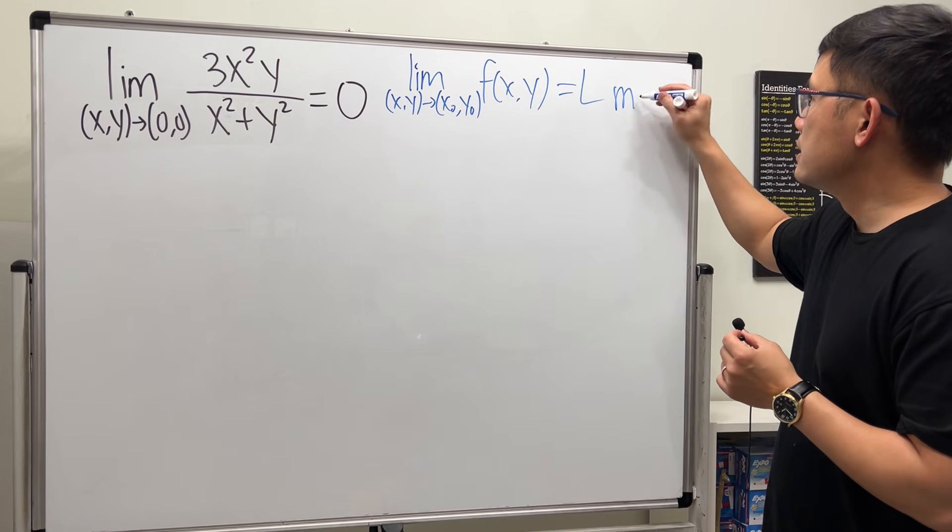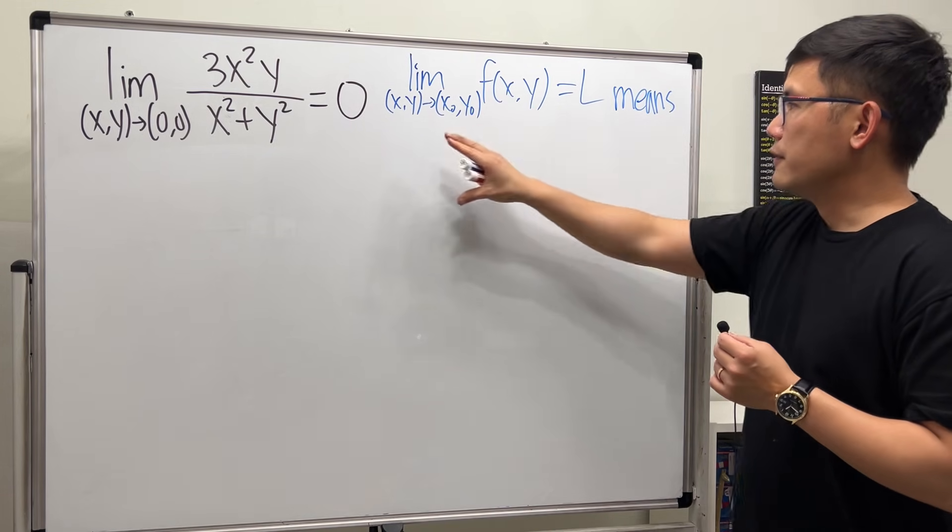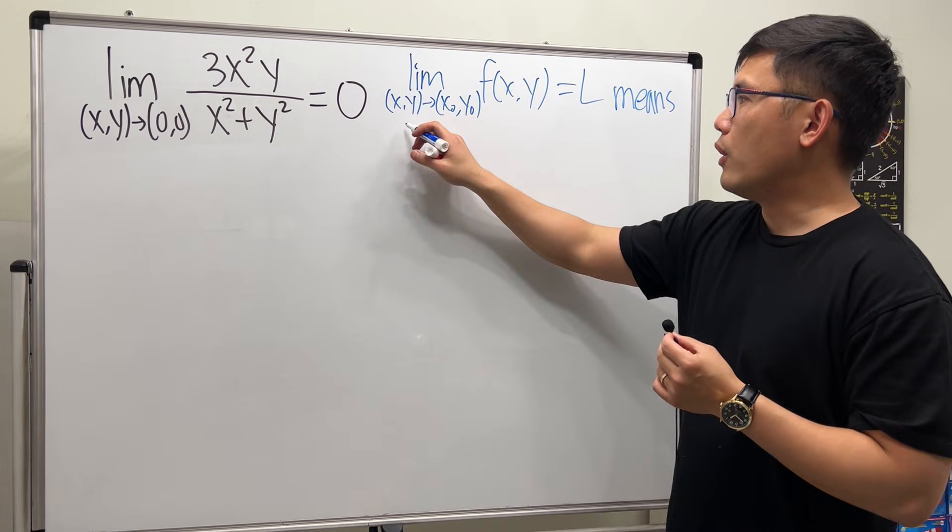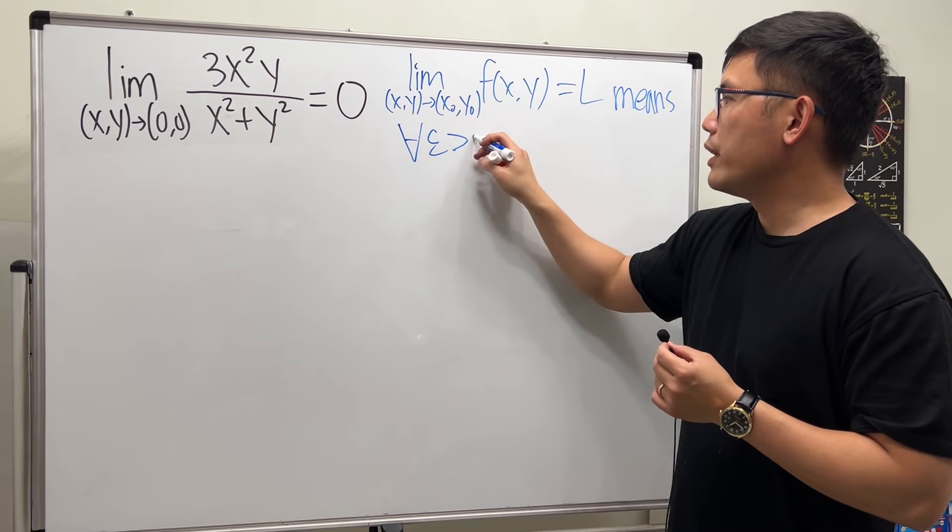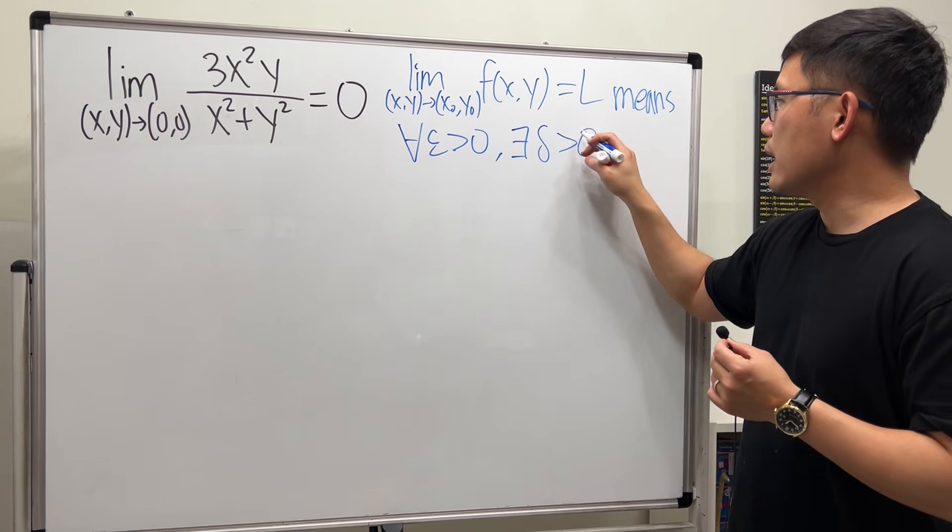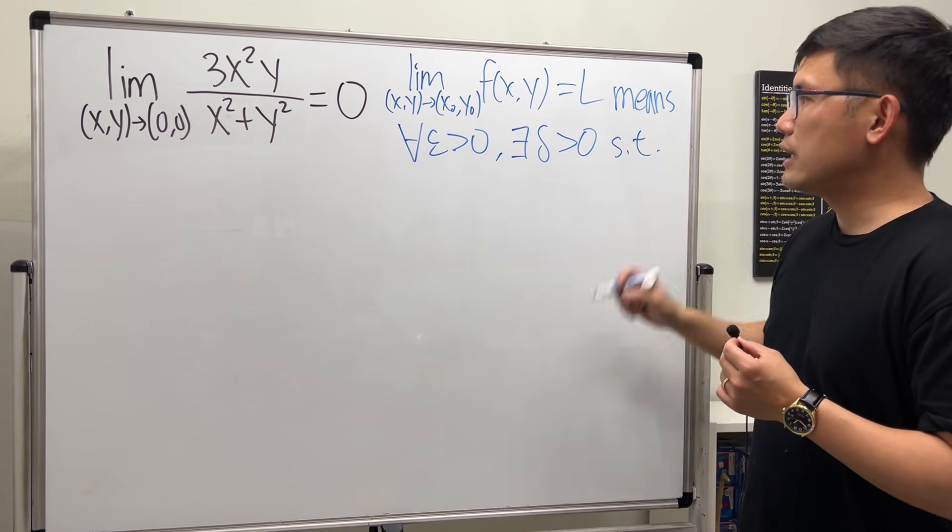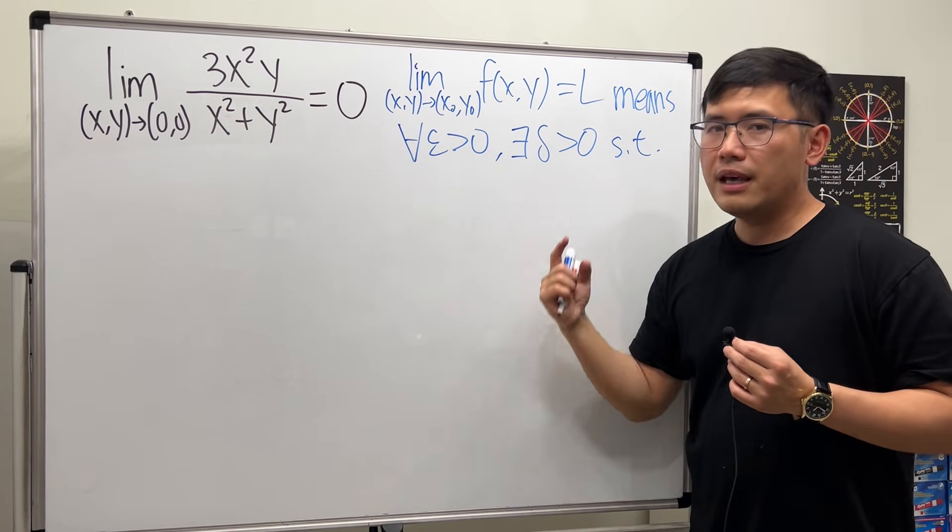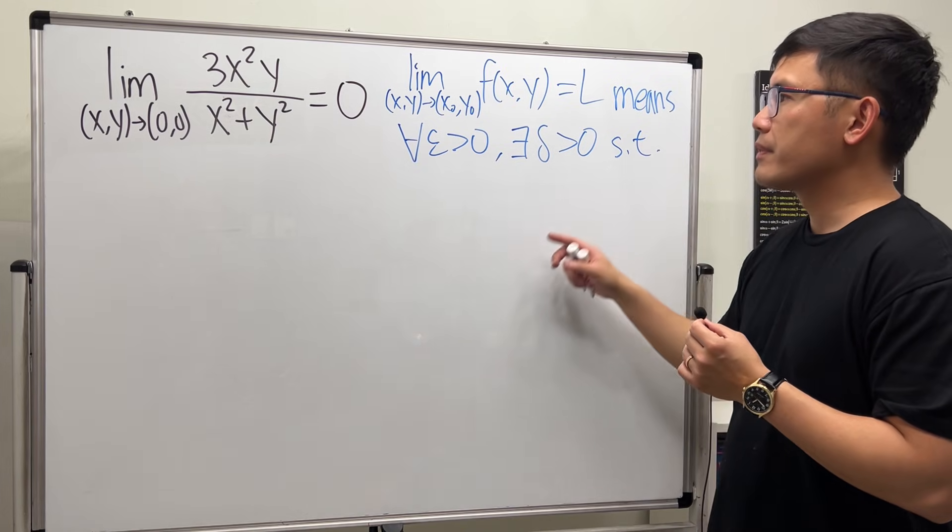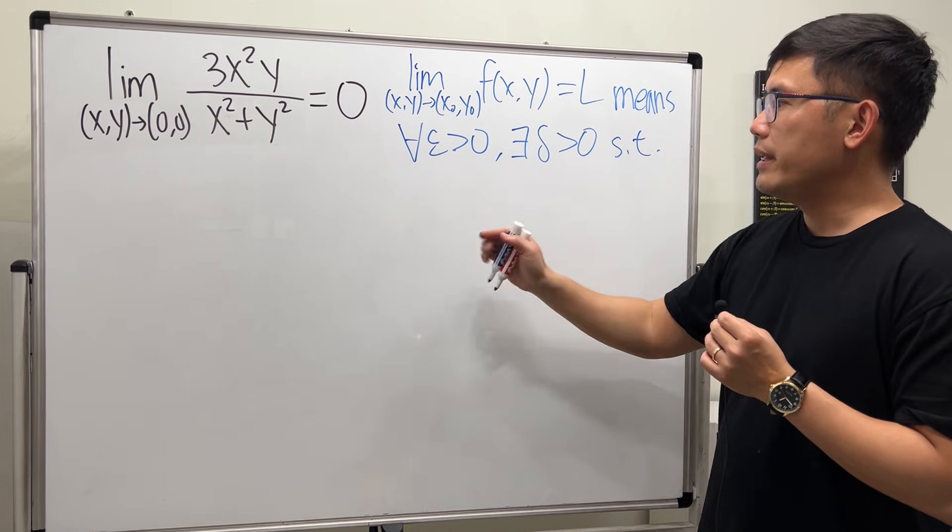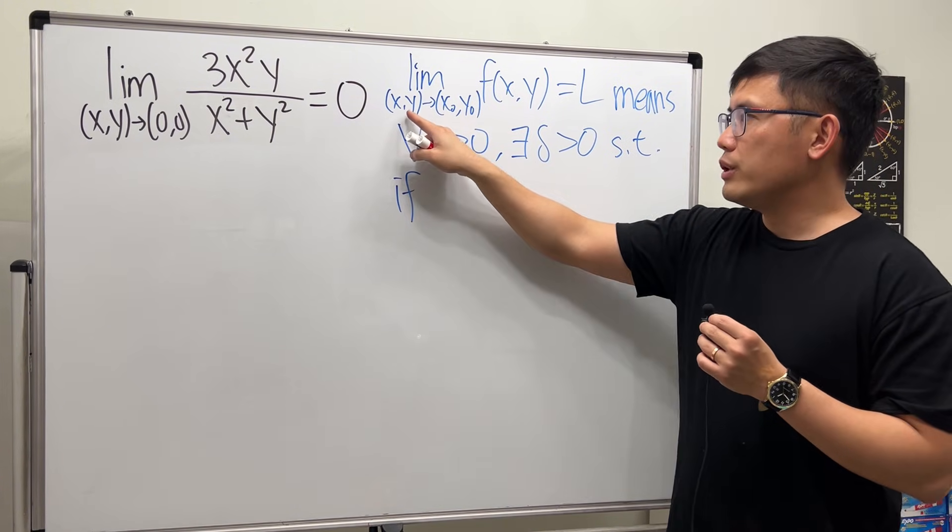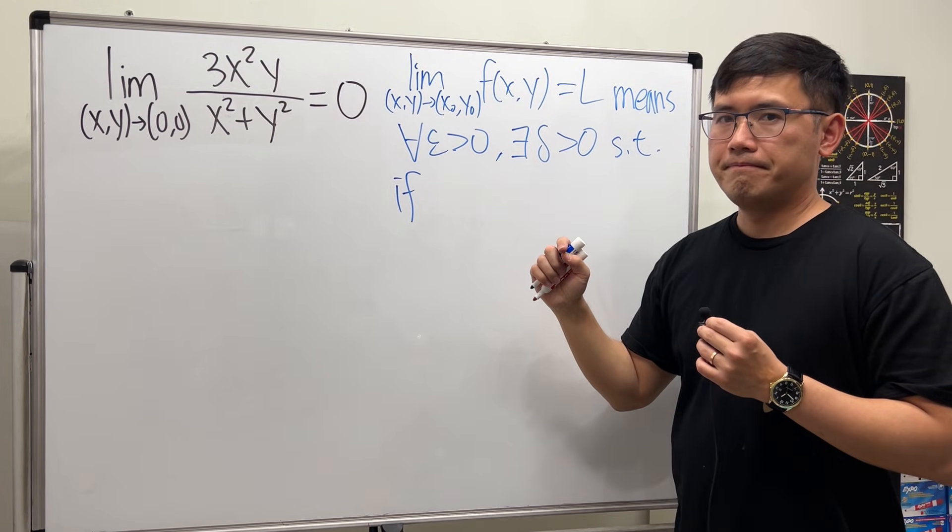This means the following is similar to the single variable case. We start with, for all epsilon greater than 0, then there exists a delta greater than 0, such that this is the same as what we saw before. And then the idea is still going to be the same, such that whenever, so we can say, if the distance between this and that, be careful though...